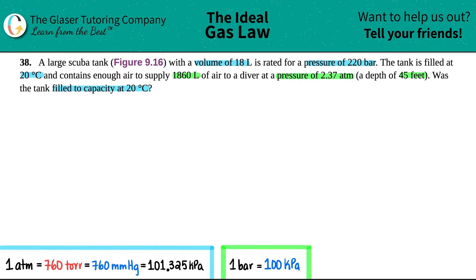But they did say that this tank had a volume of 18 liters, so we know that we have a V of 18 liters. Now they say that this volume was rated for a pressure at 220 bar. Notice with the wording, they didn't say that this was a volume at a pressure.